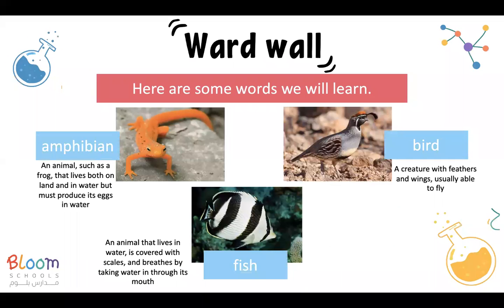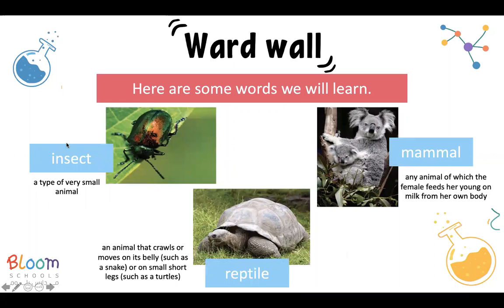This is our word wall for this week. Amphibian: an animal such as a frog that lives both on land and in water but must produce its eggs in water. Bird: a creature with feathers and wings, usually able to fly. Fish: an animal that lives in water, covered with scales, and breathes by taking water in through its mouth. Insect: a type of very small animal. Mammal: any animal of which the female feeds her young on milk from her own body. Reptile: an animal that crawls or moves on its belly, such as a snake, or on small and short legs, such as a turtle.